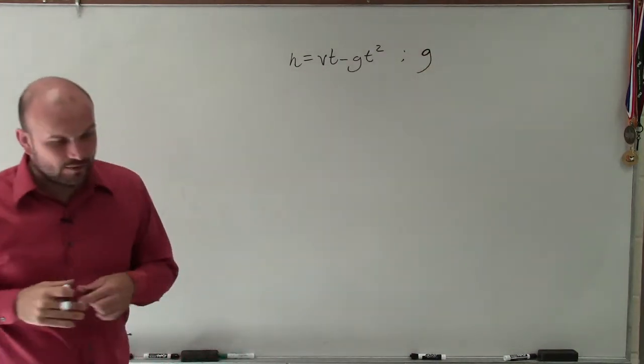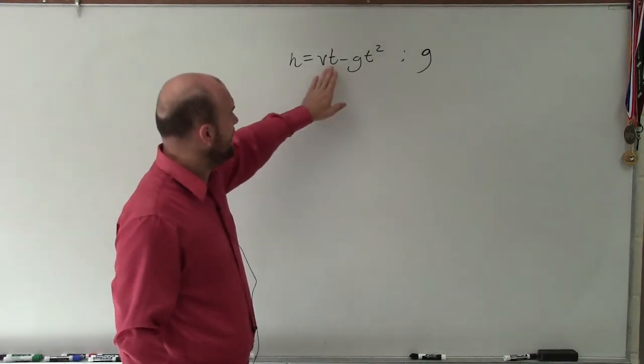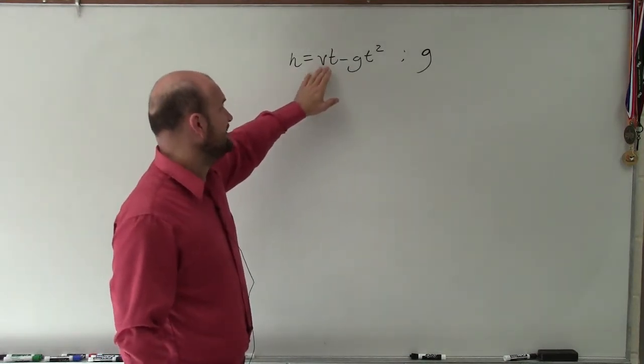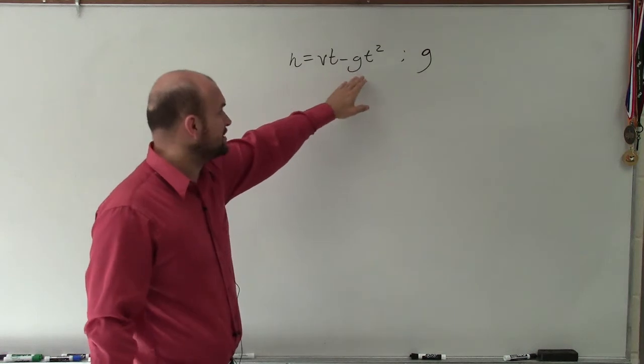So in this case, what we see is we want to isolate g. We have vt, and we're subtracting gt² from vt.